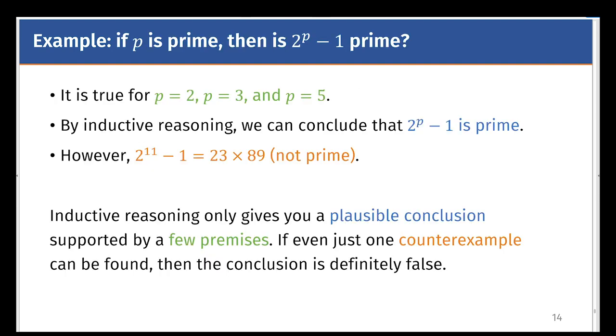Here's a famous example. If p is prime, consider the number 2 to the power of p minus 1. Do you think it's always prime? Now we can verify for a few examples of p. It is true when p is 2, 3, and 5. So by inductive reasoning, we believe that 2^p - 1 is prime for any prime number p.